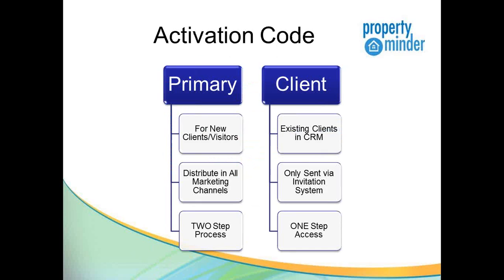To recap the activation codes: the primary activation code is the one you specify in your toolkit. It's for new clients or visitors - people not already on your system. Distribute it in all your marketing channels. It's a two-step process: they input the activation code, then register with their email and a password. The second type, the client-generated activation code, is for people already in your CRM, sent only via the invitation system. It's a one-step access - when they download the app, they're automatically queued in and ready to start using the tools in the application.